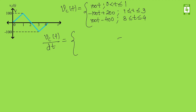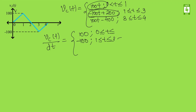Differentiating 100t gives 100, valid from 0 to 1. Differentiating -100t + 200 gives -100, valid from 1 to 3. And the differentiation of 100t - 400 gives 100, valid from 3 to 4. These are the three dV/dt equations obtained after differentiation.